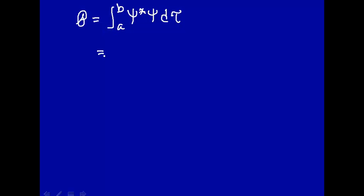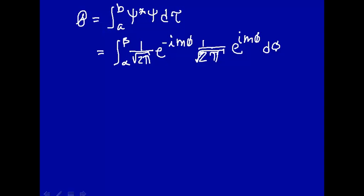If we apply this to the problem, we want to integrate from some angle alpha to some angle beta of the wave function complex conjugate of the particle on a string. That's one over the square root of 2π times e to the minus i m φ, times one over the square root of 2π times e to the i m φ, and we're integrating over dφ.